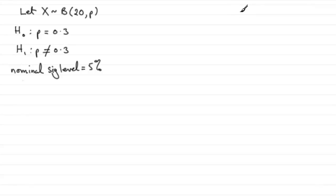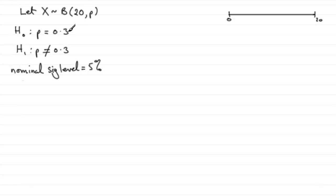Just to recap: if I draw a line representing what X could be, you could have no successes all the way up to 20 successes. If H0 is true with P equal to 0.3, then the mean for a binomial is NP, which gives us 20 times 0.3 equals 6 successes. So we're expecting around six successes if P equals 0.3.